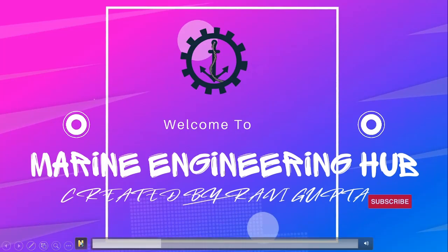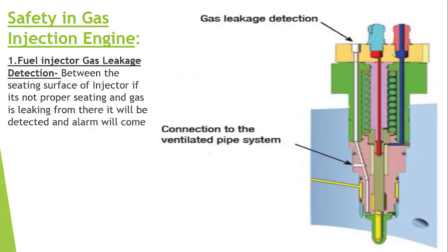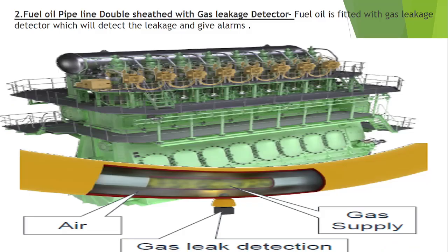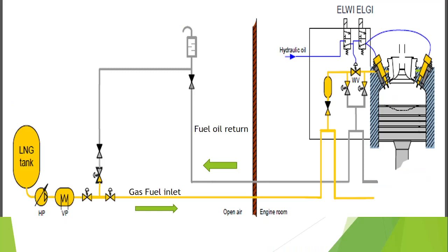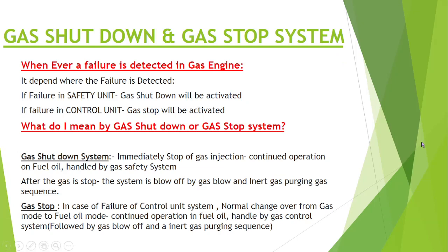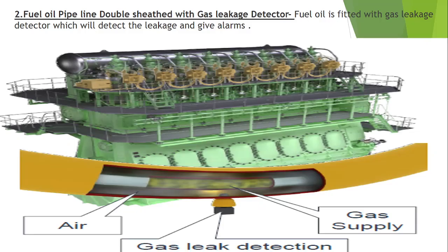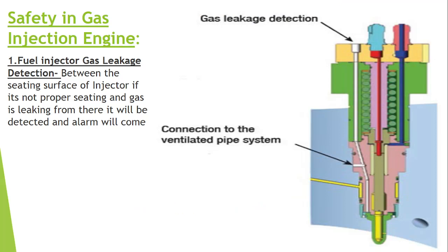Hello friend, welcome to Marine Engineering Hub. This is your narrator Ravi Gupta. Today we're going to talk about safety in a gas injection engine — what are the different safeties provided, and through a diagram we will see how this safety has been provided. We will also talk about the gas shutdown and gas stop system. This question is basically asked in the exam, and in short you can say there are four safeties.